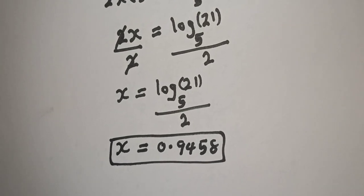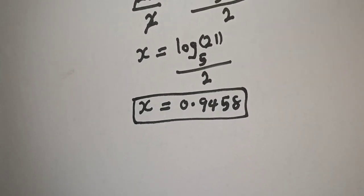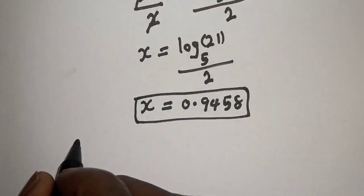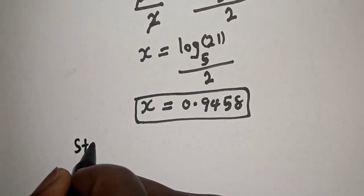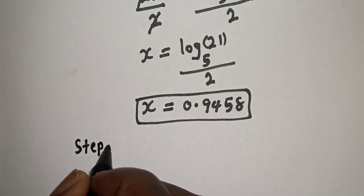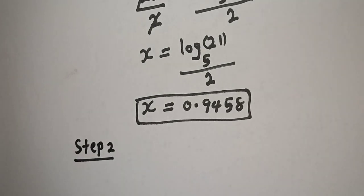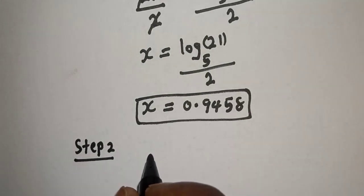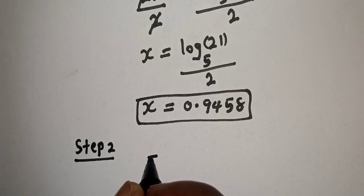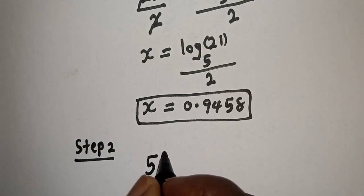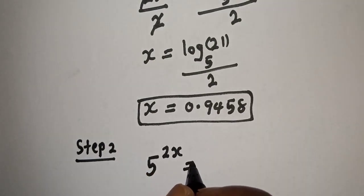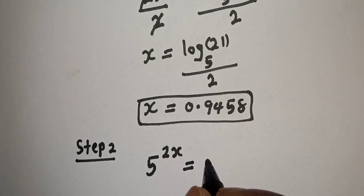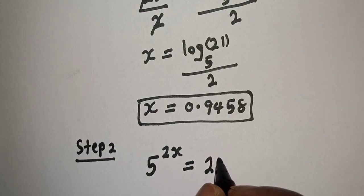Let's consider the second step. Step 2. We have the given equation: 5 raised to the power 2x is equal to 21.